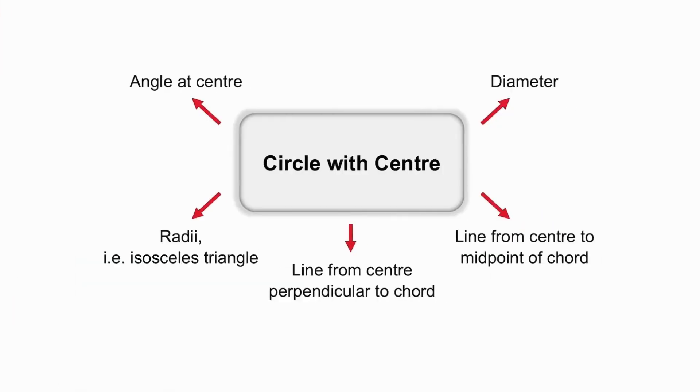When they talk about the centre of a circle, you need to think of many possibilities. The angle at the centre is equal to twice the angle at the circumference. You could have a diameter, in which case you have a 90 degree angle. Remember that the line from the centre to the midpoint of a chord is perpendicular to that chord, or the line from the centre of a circle that is perpendicular to the chord bisects the chord. You could simply have an isosceles triangle from two equal radii.